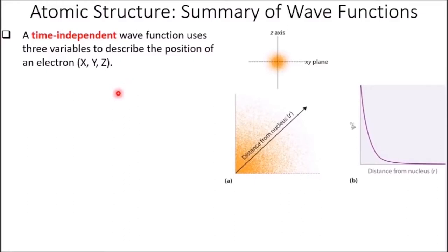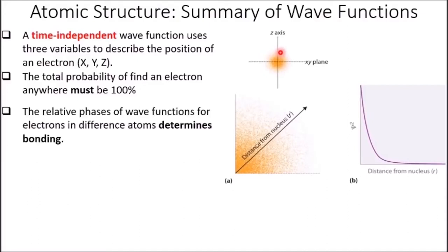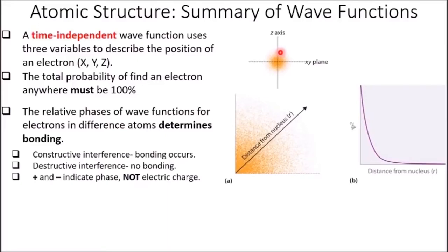Let's summarize wave functions. There are time-dependent and time-independent wave functions; we're going to talk about time-independent. A time-independent wave function uses three variables to describe the position of an electron: x, y, and z — and again, these are average distances, not exact distances. The total probability of finding an electron anywhere must be 100% — it has to be somewhere. The relative phases of wave functions for electrons in different atoms determines bonding. Constructive interference between relative waves gives bonding; destructive interference means no bonding occurs. Plus or minus, when talking about wave functions, indicates phase — not electric charge.